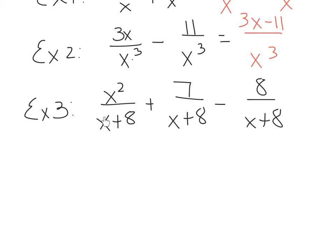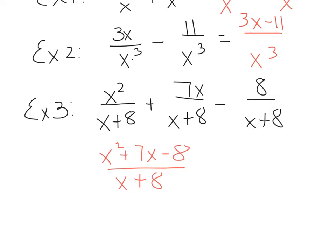Example 3 says x squared over x plus 8, plus 7x over x plus 8, minus 8 over x plus 8. Looking at the denominators first, they are already the same, so the denominator of my answer is going to be x plus 8. The numerators — we will add or subtract depending on the operation — so we'll have x squared plus 7x minus 8, and this is the beginning of our answer.